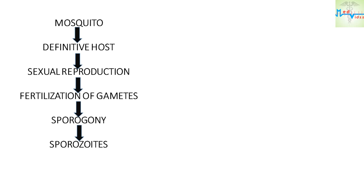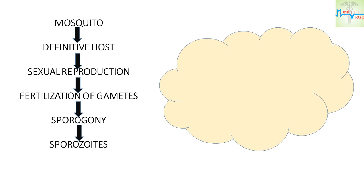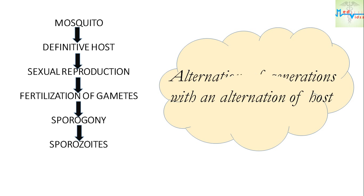In the life cycle of the malarial parasite, there is alternation of generation with an alternation of host. It completes its life cycle in two separate hosts as two generations — merozoites and sporozoites.